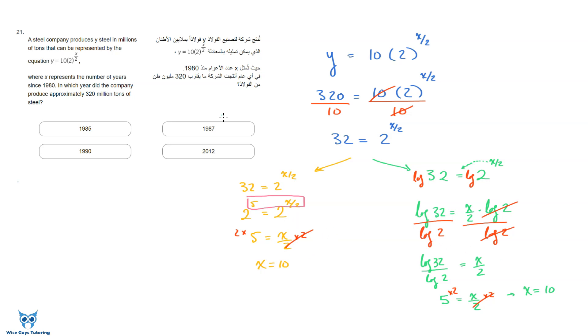Now I look here and there's no answer that's 10. What shall we do? Shall we panic? No, of course not. Let's read the question again. X represents the number of years since 1980, there you are. So we're talking about 10 years from 1980. That's when you're gonna produce 320. So you just do 1980 plus 10, which gives me 1990. There you are, that's the answer.